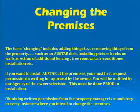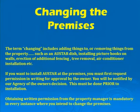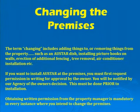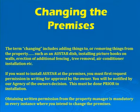The term 'changing the premises' includes adding things to or removing things from the property, such as installing a satellite dish, picture hooks on walls, erection of additional fencing, tree removal, air conditioning installation, and many other things. If you wish to install a satellite dish, for example, you must first request permission from us in writing. You'll be notified of the owner's decision, and this must be done prior to any installation. Obtaining written permission from the property manager is mandatory in every instance where you intend to change the premises.